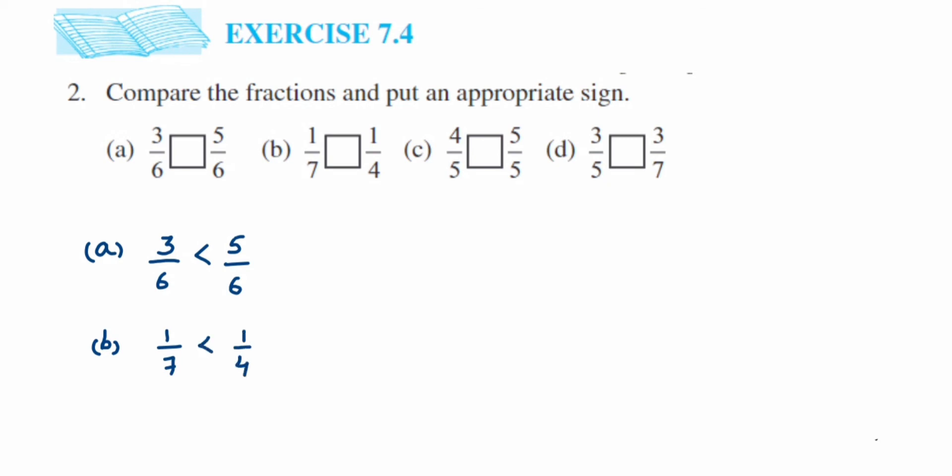Next we have 4 by 5 and 5 by 5. So 5 is given in the denominator, so it means it is a like fraction. In like fractions we have to check the numerator. So 5 is greater than 4, so 5 by 5 is greater.